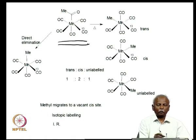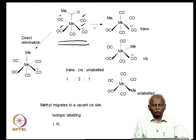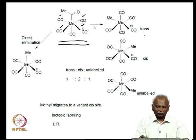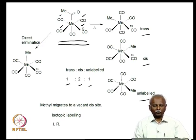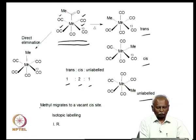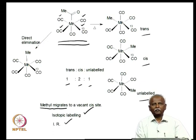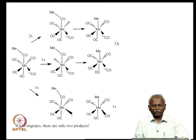He showed that any one of the carbon monoxides which are cis to the acetyl group can leave, and so you get a ratio of trans to cis to unlabelled as 1:2:1. This is exactly the ratio in which you have the four carbon monoxides which can leave the coordination sphere of the metal. So very clearly he demonstrated that it is the anionic group — the methyl group — that migrates to a vacant coordination site, using isotopic labelling and infrared spectroscopy.